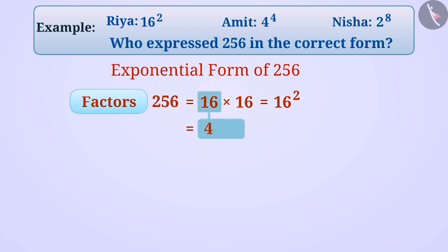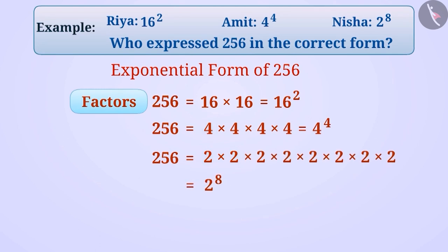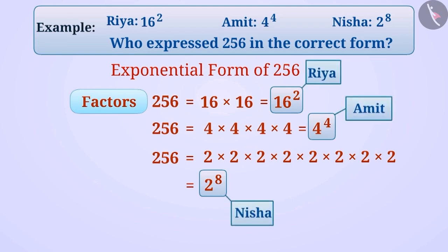If we write 16 as a factor of 4 multiplied by 4, then we get 256 is equal to 4 multiplied by 4 multiplied by 4 multiplied by 4, which is equal to 4 raised to the power of 4. It is also an Exponential Form of 256. That is, we can express 256 in Exponential Form as 16 raised to the power of 2, 4 raised to the power of 4, or 2 raised to the power of 8. Hence, Rhea, Amit and Nisha all three have expressed 256 in the correct form.